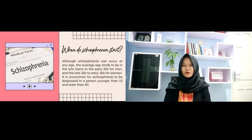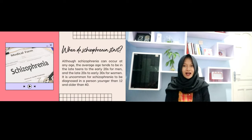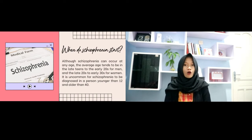Although schizophrenia can occur at any age, the average age of onset tends to be in the late teens and early 20s for men, and the late 20s and early 30s for women. It is uncommon for schizophrenia to be diagnosed in a person younger than 12 or older than 40.